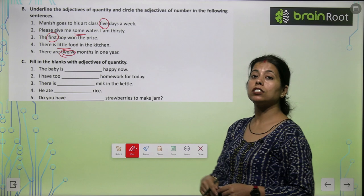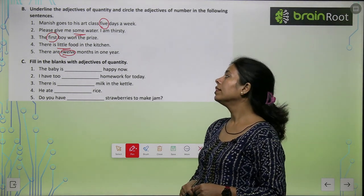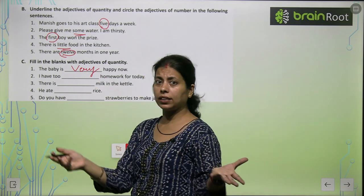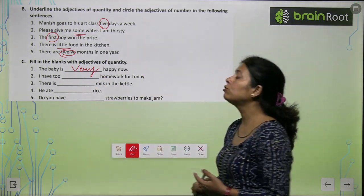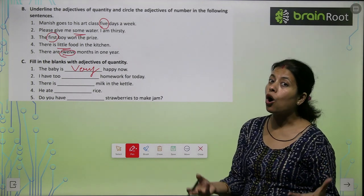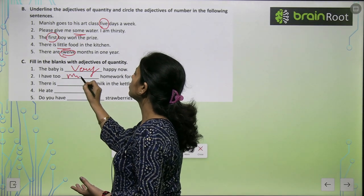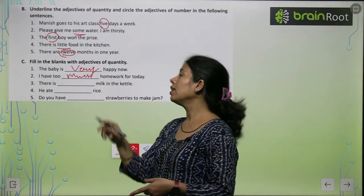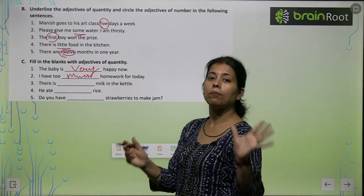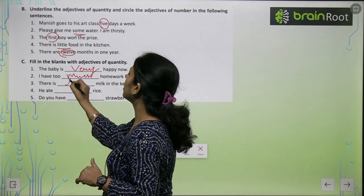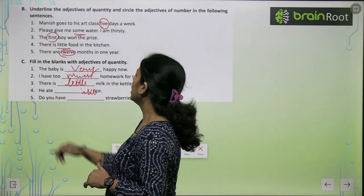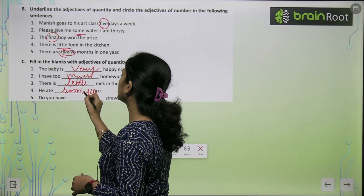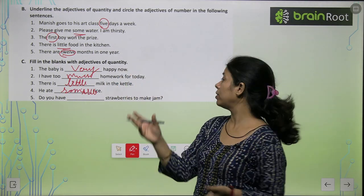Next exercise — filling the blanks with adjective of quantity। The baby is very — quantity बताना है — very happy। I have too much homework for today। There is little milk in the kettle — little milk, थोड़ा quantity है। He ate some rice। Do you have enough strawberries to make jam?